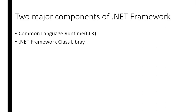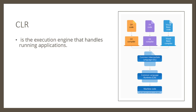CLR is the execution engine that handles the running application. In other programming languages in the C family, like C++ and C, when you run your code, the compiler converts your code directly into machine code. So that application will not run on a machine with different hardware, architecture, or operating system.